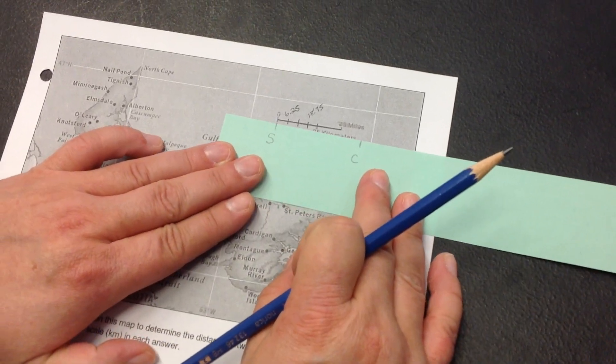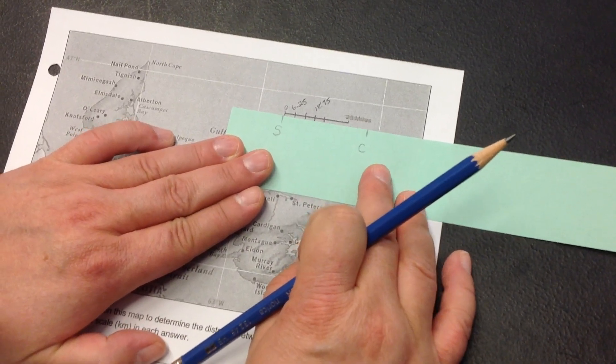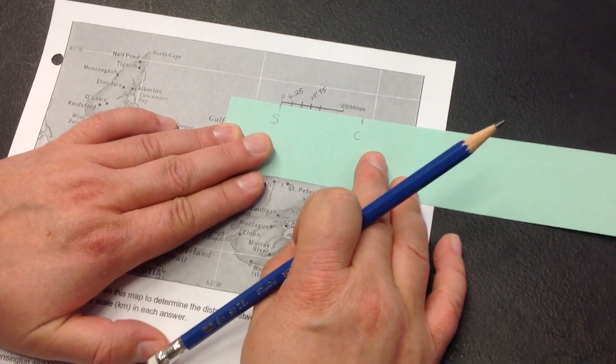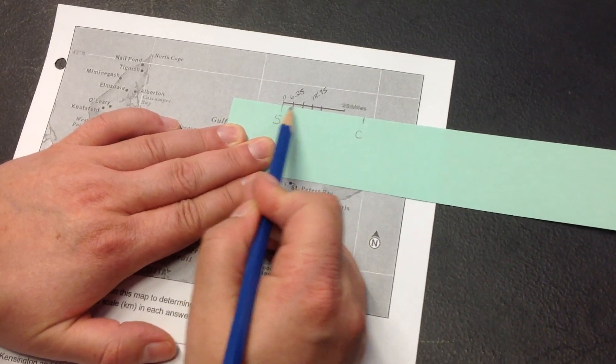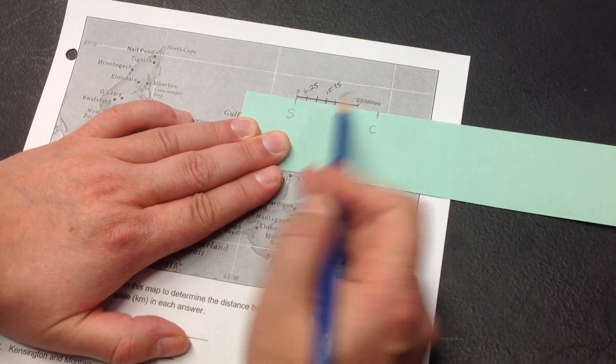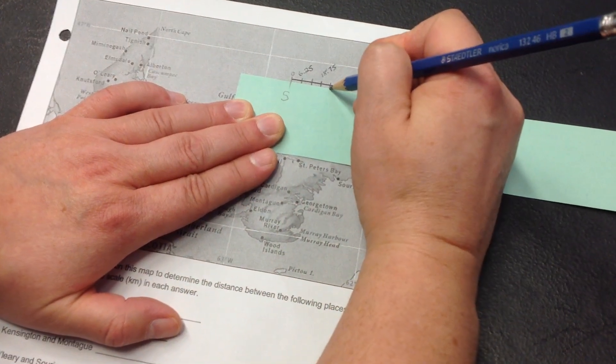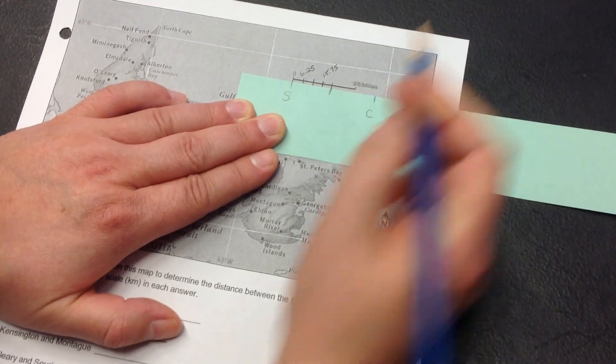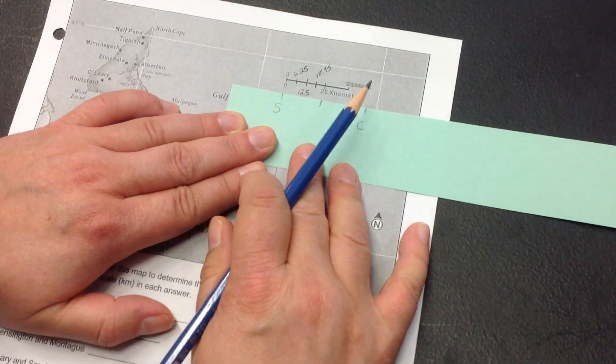We're going to line the S for Summerside up against the zero and then we're going to mark as far as we can, which is right here. And that represents 25 kilometers. So, I'm going to mark 25 down here.